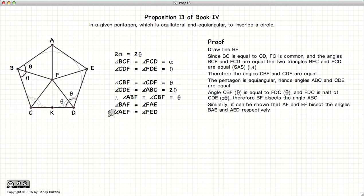And similarly, we can demonstrate that each one of these angles has been bisected. So by drawing the lines from the vertices to the point F, bisects each of the angles of the pentagon.